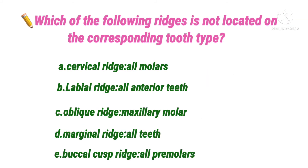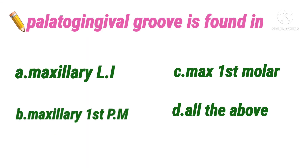Next question: which of the following ridges is not located on the corresponding tooth type? Option A cervical ridge on all molars, B labial ridge on all anterior teeth, C oblique ridge on maxillary molars, D marginal ridge on all teeth, E buccal cusp ridge on all premolars. All options except B are correct. The labial ridge is not seen on all anterior teeth — it is seen only on canines. So the answer is option B.